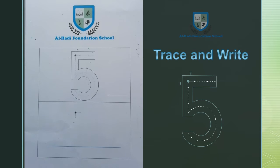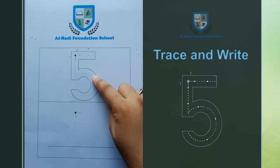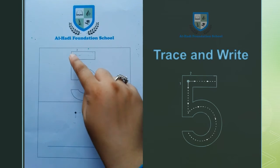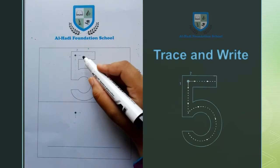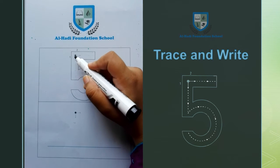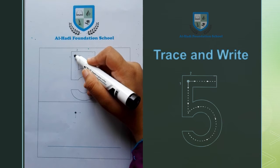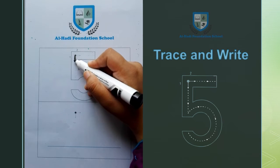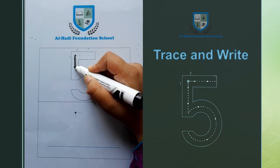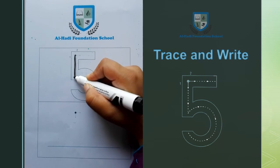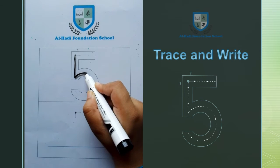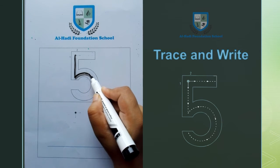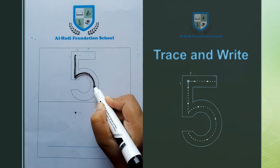Now we will learn to trace 5. Trace 5 with your finger. Now hold the pencil and place it on the starting dot on 5. Hold the pencil on the starting dots, then make a point on the right side and go directly to the right side.